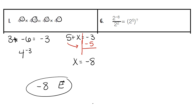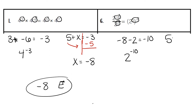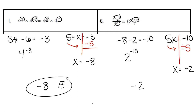For number 6, we start with the division problem, which means we subtract: negative 8 minus 2. Negative 8 minus 2 gives us a negative 10, so our answer is 2 to the negative 10th power. On the other side, we're multiplying these two exponents, so we want to know 5 times what gives us negative 10. We can work backwards by dividing by 5. Negative 10 divided by 5 gives us a negative 2. Our missing exponent, negative 2, is represented by the letter S at the bottom.